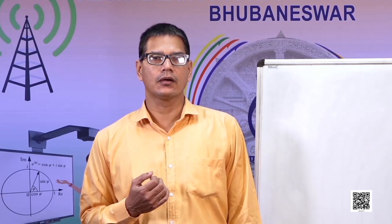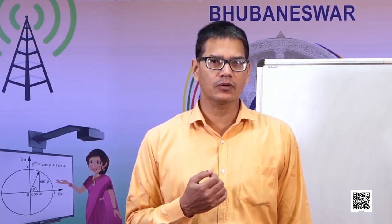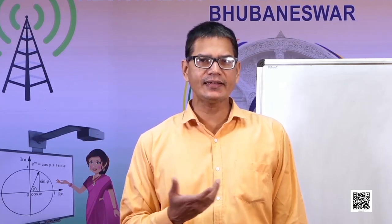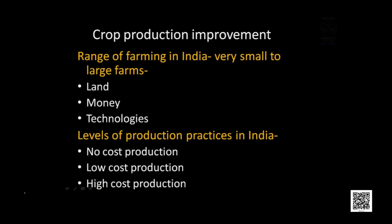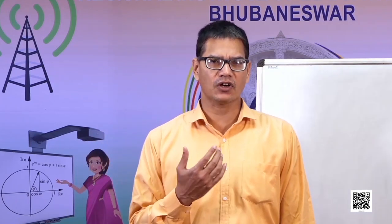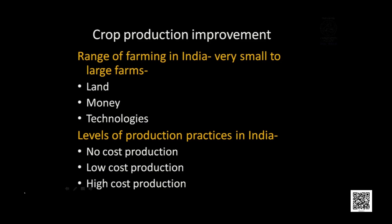Before that, we have to see the scenario of farming in India. It varies a lot — from very small farms to very large farms — and also in terms of land, money, and technology. Some farmers use very small land and small money with traditional technologies, whereas some farmers farm huge land with modern technologies and large capital. Based on that, levels of production practices in India can be classified as low cost production and high cost production.